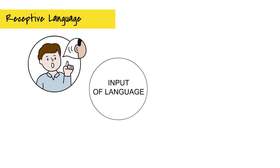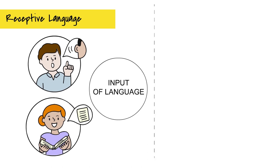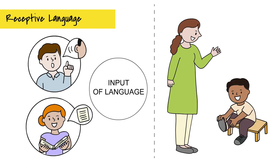Receptive language is the input of language, the ability to understand and comprehend spoken language that you hear or read. For example, a child's ability to listen and follow directions, e.g., put on your shoes, relies on the child's receptive language skills.